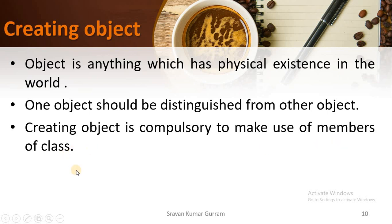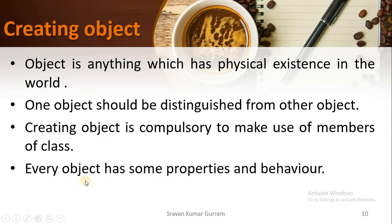As we have seen, in our class we have variables and methods. If you want to use those variables and methods, you must create an object for that class. Without creating an object, you cannot use any members of the class. Every object has some properties and behaviors. If you create an object for a particular class, that object will get all the instance variables and methods of that class — in other words, the object gets the properties and behavior of that class.